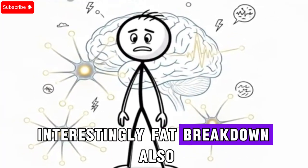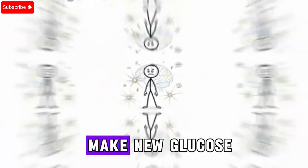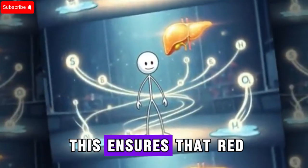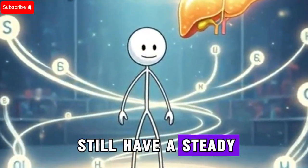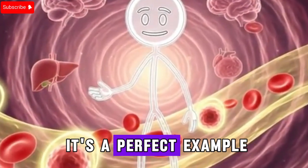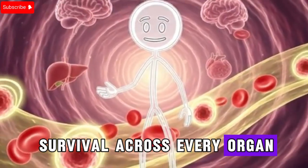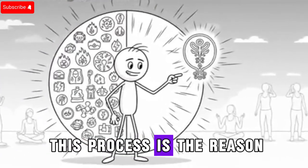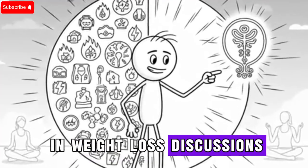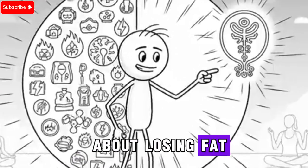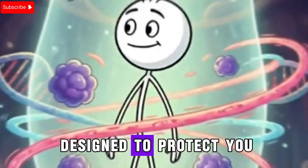This is why fasting is sometimes studied in relation to neurological health, including conditions like epilepsy and Alzheimer's disease. Interestingly, fat breakdown also releases glycerol, a molecule that your liver can use to make new glucose. This ensures that red blood cells, which cannot run on fat, still have a steady sugar supply. This process is the reason fasting has attracted so much attention in weight loss discussions. But it's not just about losing fat. It's about unlocking an ancient energy system designed to protect you.